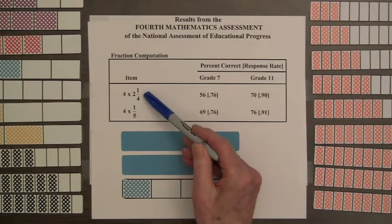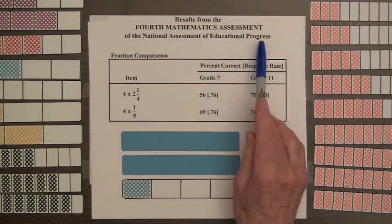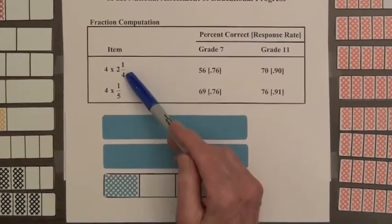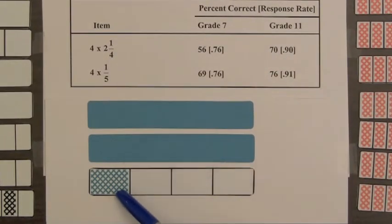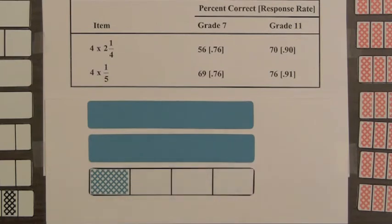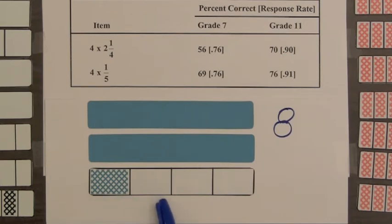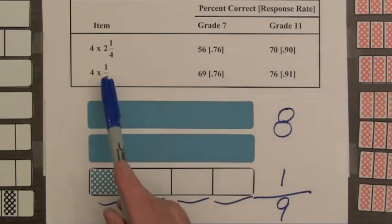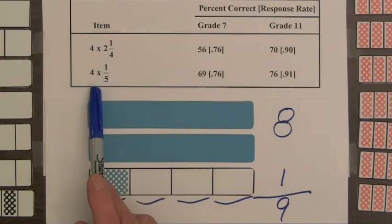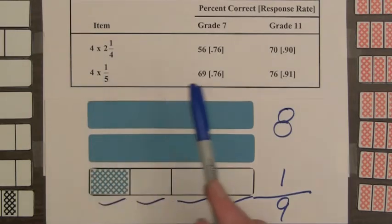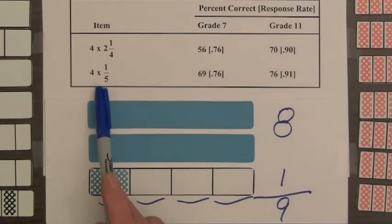Here are two products from the fourth test given by the National Assessment of Educational Progress. For the first product, four times two and one-fourth: two whole bars taken four times gives eight, and four of the one-fourth bars gives one more whole bar, for a total of nine. Thirty percent of eleventh graders did not get the correct answer of nine. For the second product, four times one-fifth means four of the one-fifths, giving four-fifths. Approximately one-fourth of eleventh graders missed that. The ideas are not difficult — in both examples we are taking four of something — but for some students, the symbols and operations do not make sense.